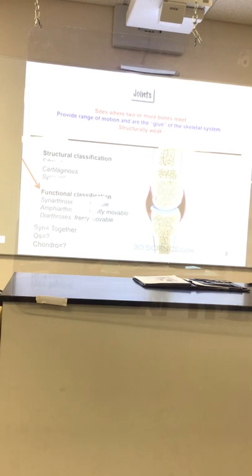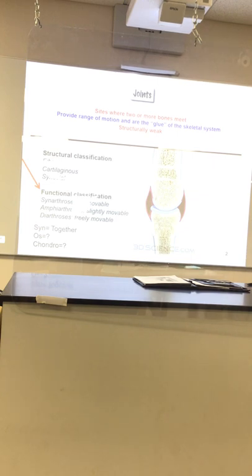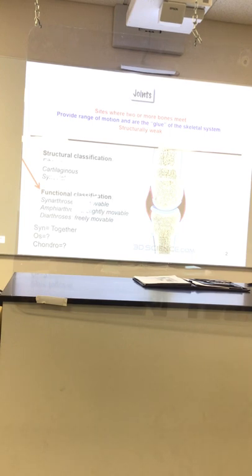We further classify joints by how they function. The terms are synarthrotic, amphiarthrotic, and diarthrotic. 'Syn' as a root means togetherness — synarthrotic joints are together, non-moving, fixed. Your skull bones don't move — they are synarthrotic. Anytime you see 'arthro,' think joints, as in arthroscopic surgeons who work on joints.